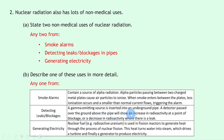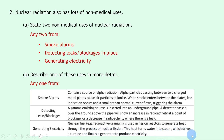For detecting leaks or blockages, a gamma-emitting source is inserted into an underground pipe. A detector passed over the ground above the pipe will show an increase in radioactivity at a point of blockage, or a decrease in radioactivity where there is a leak.